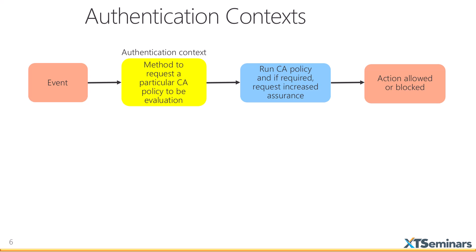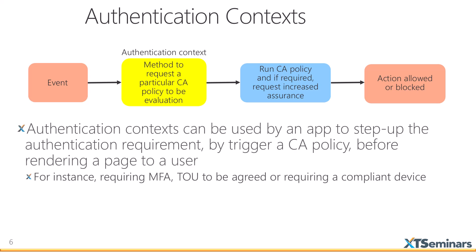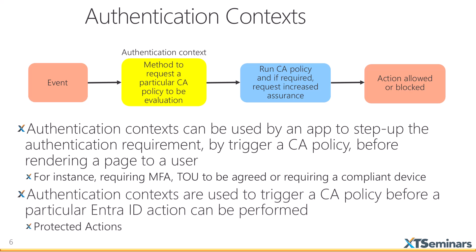All the conditional access goodness is there - we're just triggering it using this authentication context. The authentication context is triggered by an event. One of the events you can use is when a particular web page is accessed - a website can send up an authentication context request to Entra ID, which triggers the evaluation in conditional access. You can do that in SharePoint using sensitivity labels. Protected actions allow us to trigger an authentication context when a particular permission is used in the directory, which in turn triggers the evaluation of the CA policy.